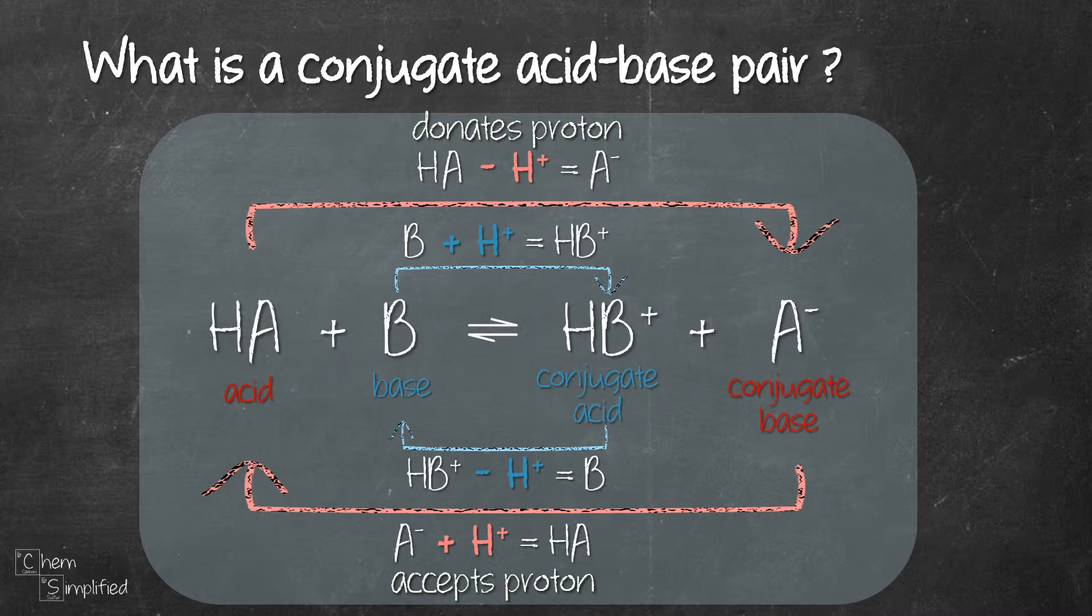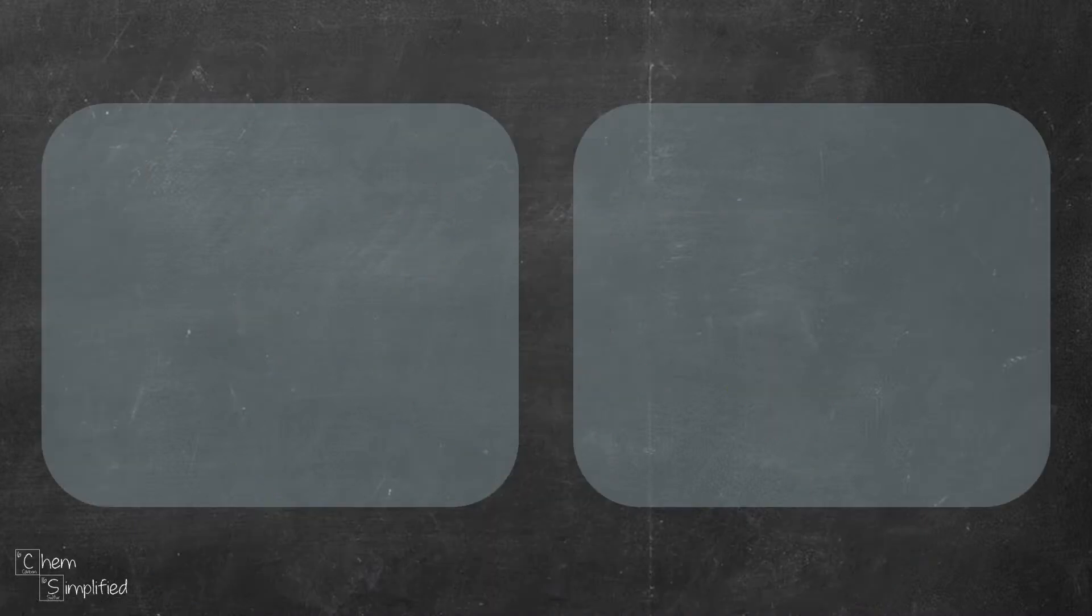So a conjugate acid-base pair is a set of species that has basically the same formula except they are different by H+. Let me rewrite our conjugate acid-base pair so it will be even easier to see their relationship.